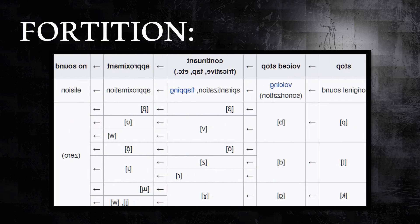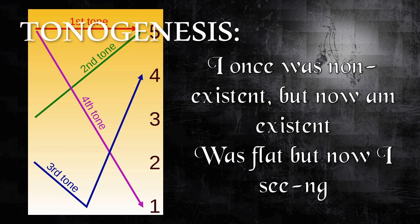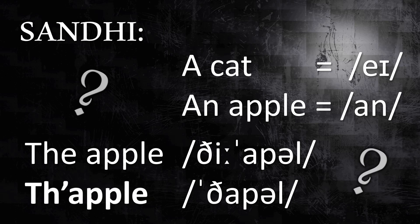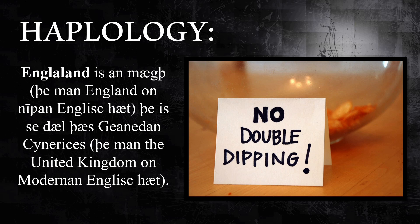Fortition is like lenition but sounds are getting stronger. Tonogenesis is the genesis of — believe it or not — tones. It's also very complicated. Sandhi: it's why 'a' is pronounced 'an' when the next word starts with a vowel, or why in rapid speech 'the apple' might become 'thapple' — which honestly I really quite like. Haplology: when there are two similar syllables next to each other, so folks just skip one, like 'probably' being pronounced 'probly,' or how apparently 'England' used to be pronounced 'Inglaland.'